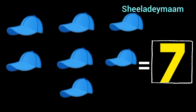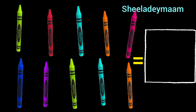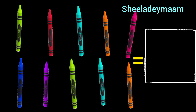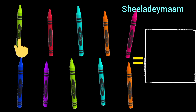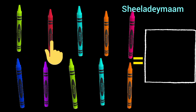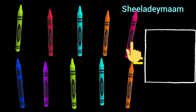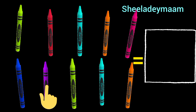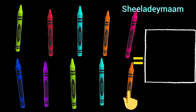Children, this is number 7. See, the next picture is of crayons. Let's count. How many crayons are there? 1, 2, 3, 4, 5, 6, 7, 8, 9, 10.